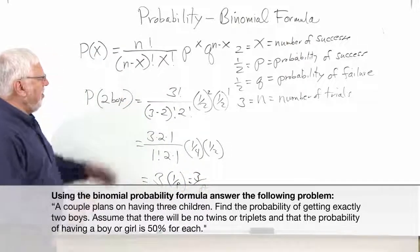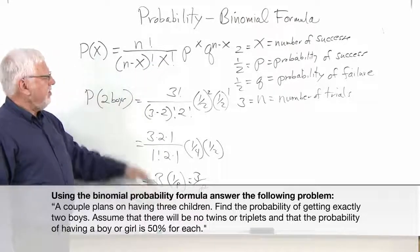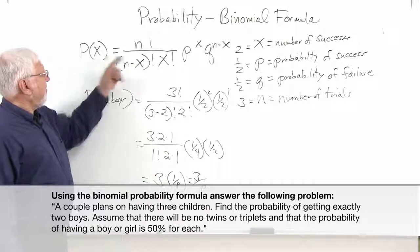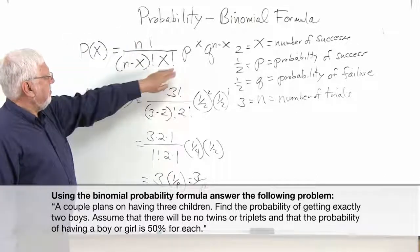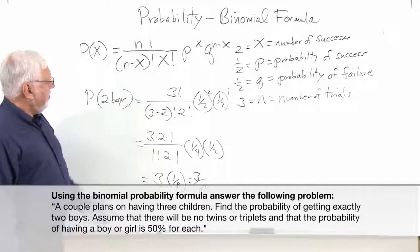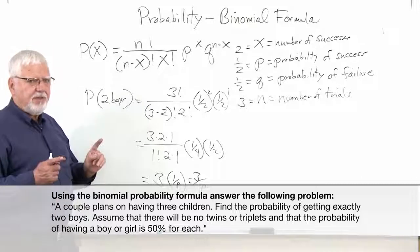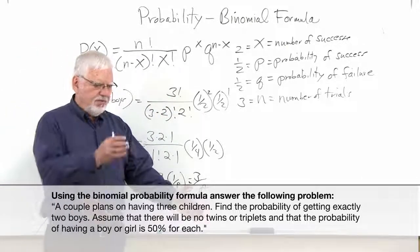But that's how you use this formula. Whenever you have a binomial situation, you can use this formula. Number of successes, total number of times, and then the probability of success, probability of failure. And so you can work out all kinds of problems, but they have to be a binomial distribution, where there's either true or false.